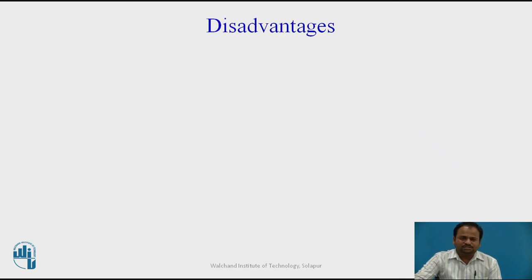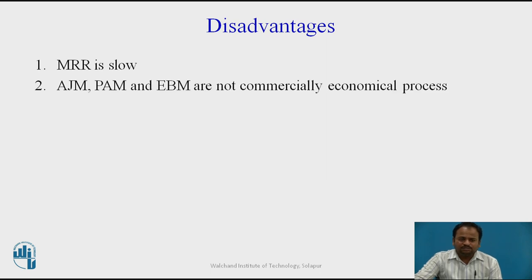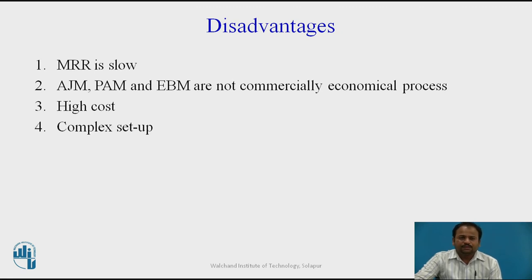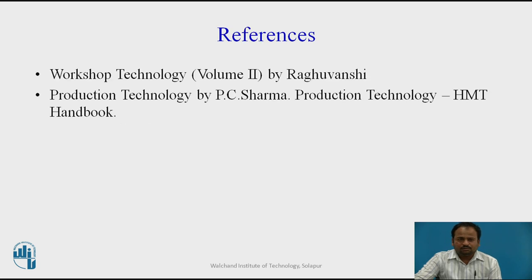Some limitations or disadvantages: material removal rate is slow because only very small amounts of material can be removed at a time. Abrasive jet machining, plasma arc machining, and electron beam machining are not commercially economical — these are very expensive processes. The cost of equipment is very high, the setup is complex, and skilled operators are required. References recommended are Workshop Technology by Ragu Mushi, Production Technology by PC Sharma, and the HMT Handbook. Thank you.